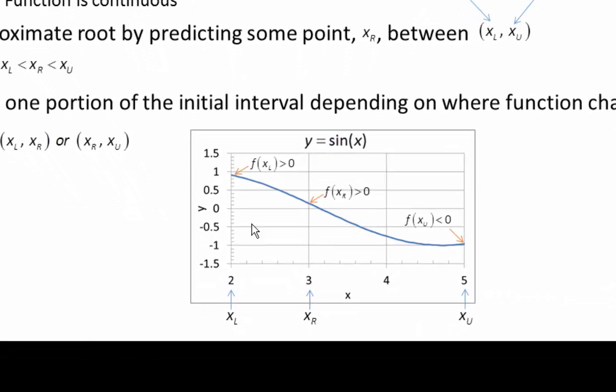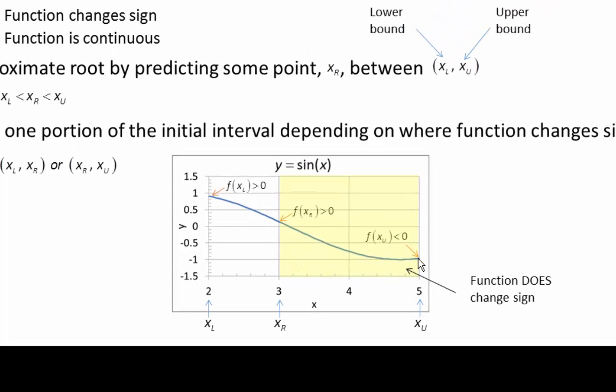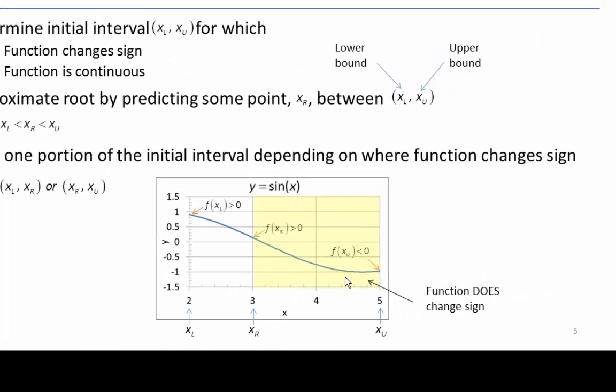To look at this graphically, we have a lower bound XL where the function is positive, and an upper bound XU where the function is negative. It's a continuous function, so somewhere in here it crosses the X axis. We can make an approximation of the root here at 3, and this approximation is positive. Between XL and XR, the function is positive and positive, so it does not change signs. Between XR and XU, it does change signs. So now we know that we have a smaller interval between XR and XU that changes signs and is continuous, so we would then repeat the process.